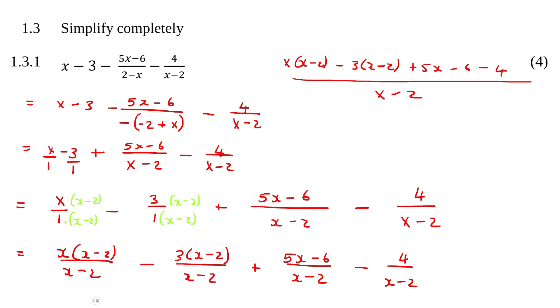So we're going to end up with x squared, take away 2x, take away 3x, add 6, add 5x, take away 6, take away 4.